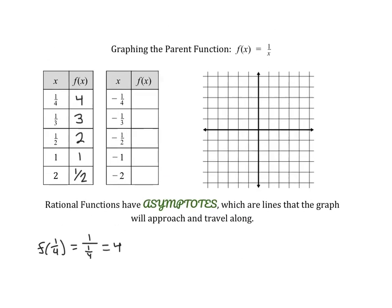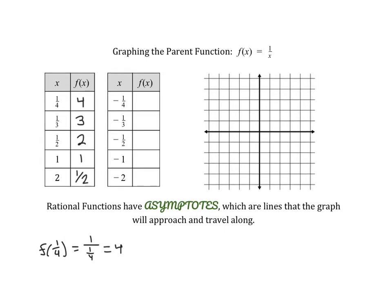We can do the same thing for the negative values. This would be negative 4, negative 3, negative 2, negative 1, negative 1 half. Let's plot these coordinates.